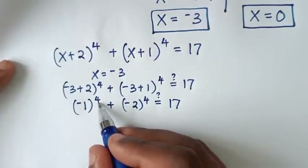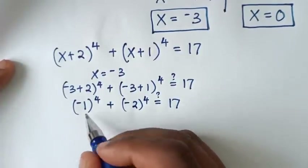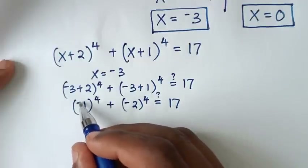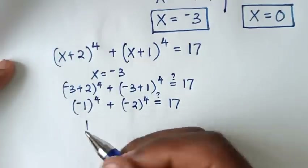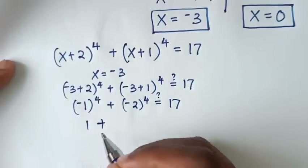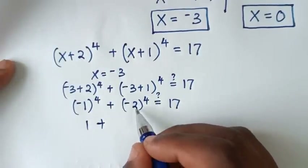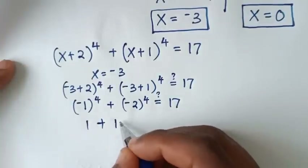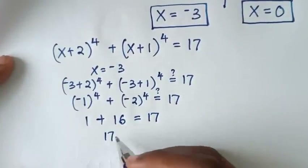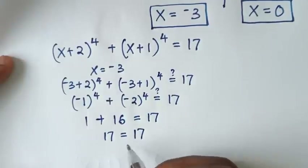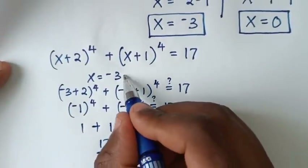(-1)⁴ = 1, since a negative number to an even power is positive. And (-2)⁴ = 16. So 1 + 16 = 17 = 17. Left side and right side are equal. It is true for x = -3.